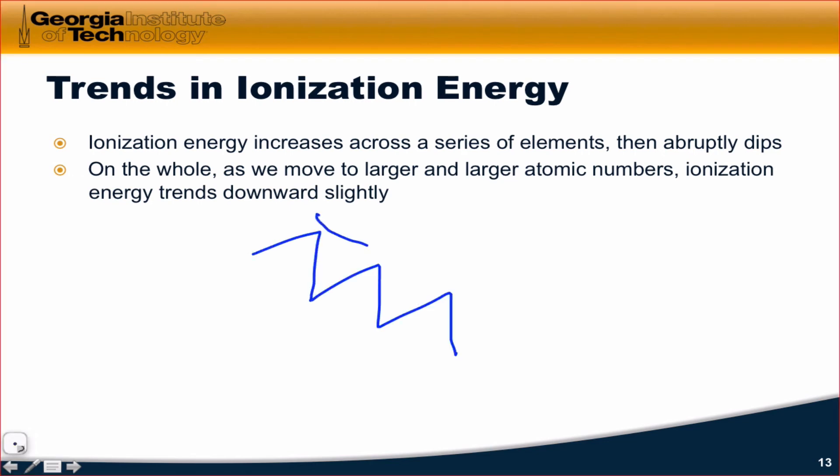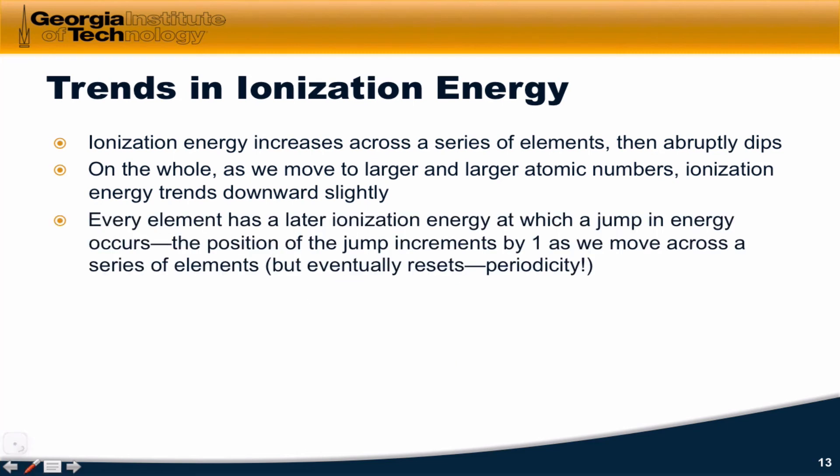So again, as we move further to the right, in general, the ionization energy is decreasing. We also notice that every element has a later ionization energy, second, third, fourth, etc., at which a jump in energy occurs between that ionization energy and the one that came before it. The position of the jump increments by one as we move across a series of elements, but does eventually reset.